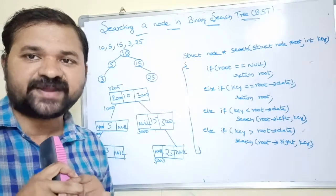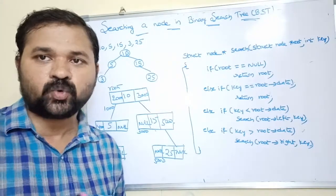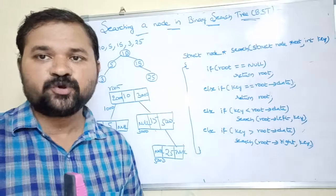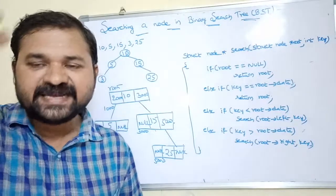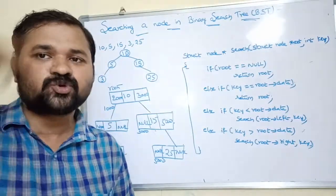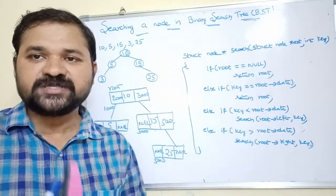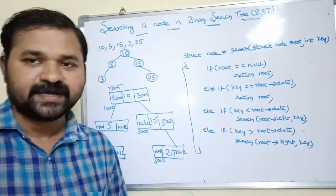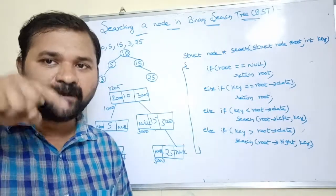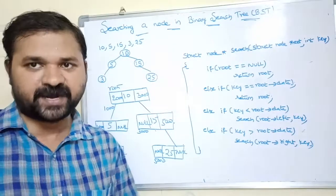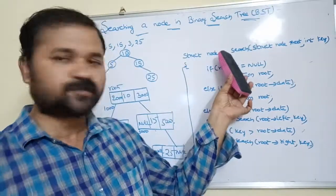Now let's see about searching for a node in a binary search tree. For searching, we simply have to follow the logic of binary search. We compare the key element with the middle element — if the key equals the middle element, the search is successful. If the key is less than the middle element, we search the left part; if it's greater, we search the right part.